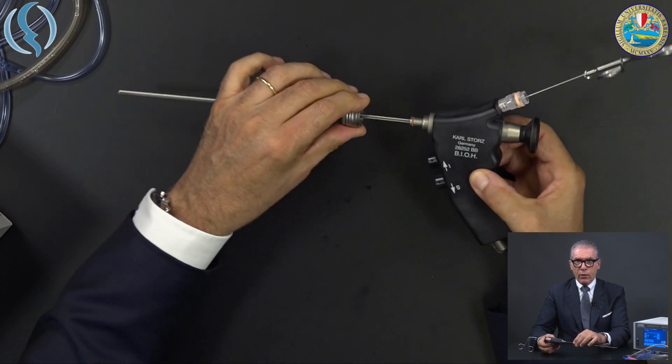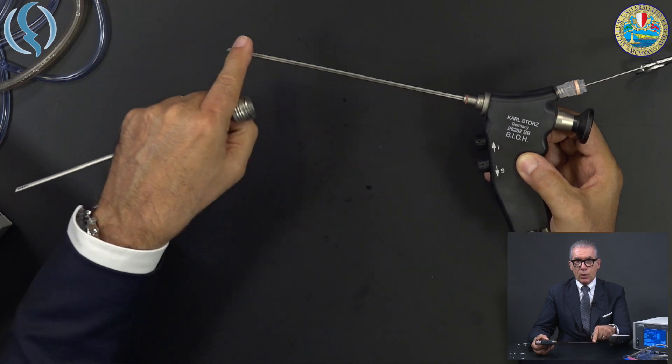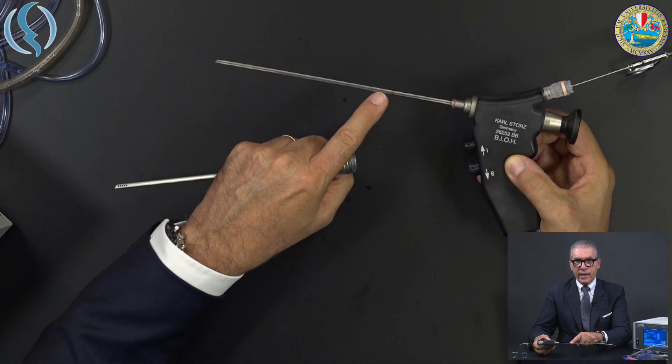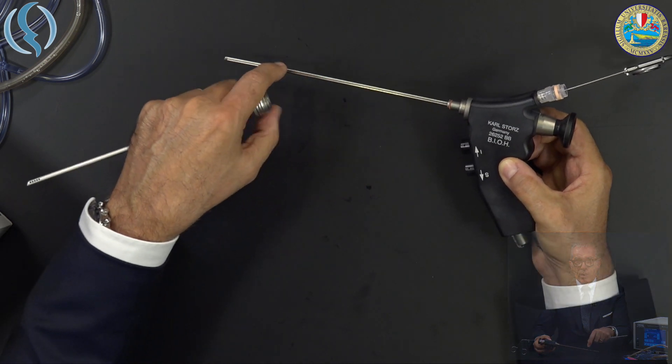And the final point, we have only one sheath, being the lens included in what before was considered the internal sheath. You see here you have the lens and the operative channel on the top.